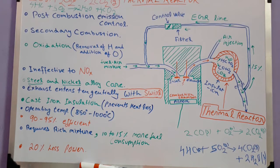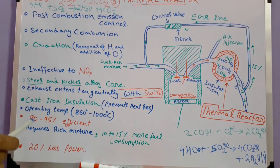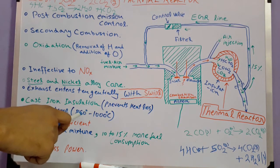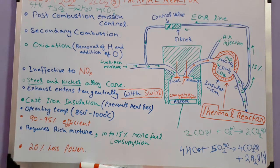The reactor core is insulated from cast iron to prevent heat loss, and a temperature of 850 to 1000 degrees Celsius is maintained for proper reaction. The thermal reactor package reduces up to 90 to 95 percent of hydrocarbon and carbon monoxide emissions.